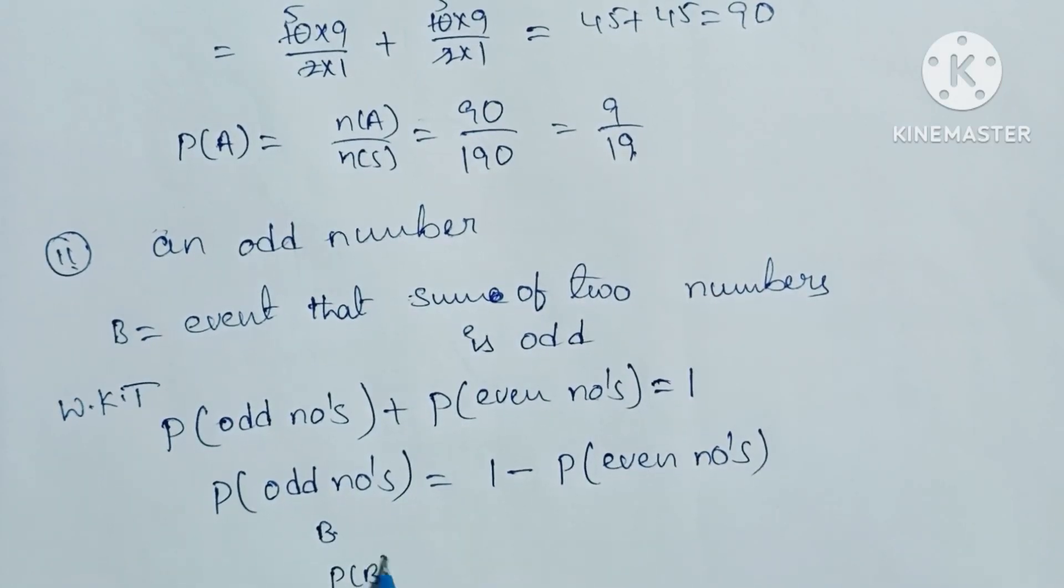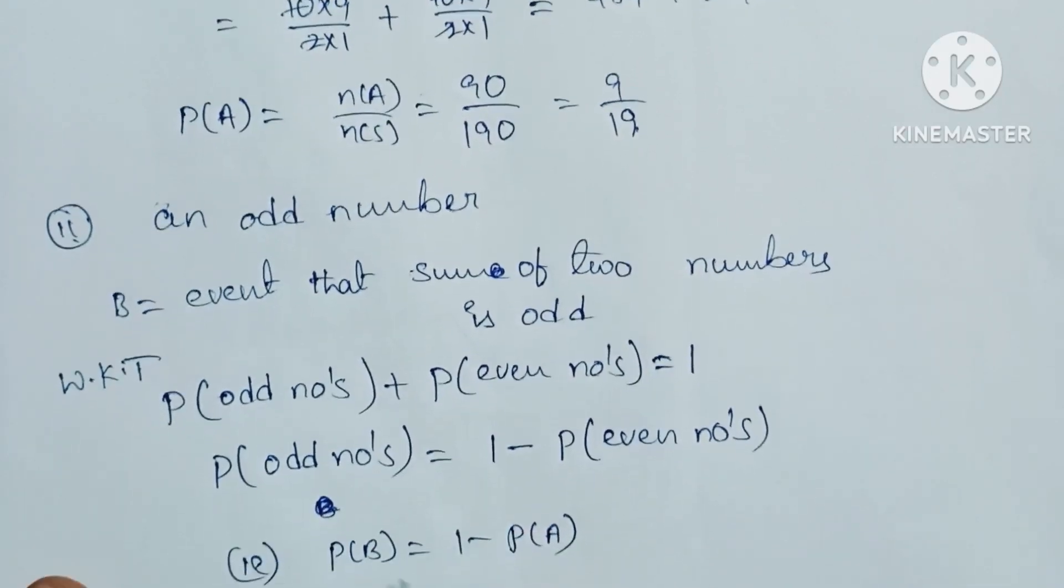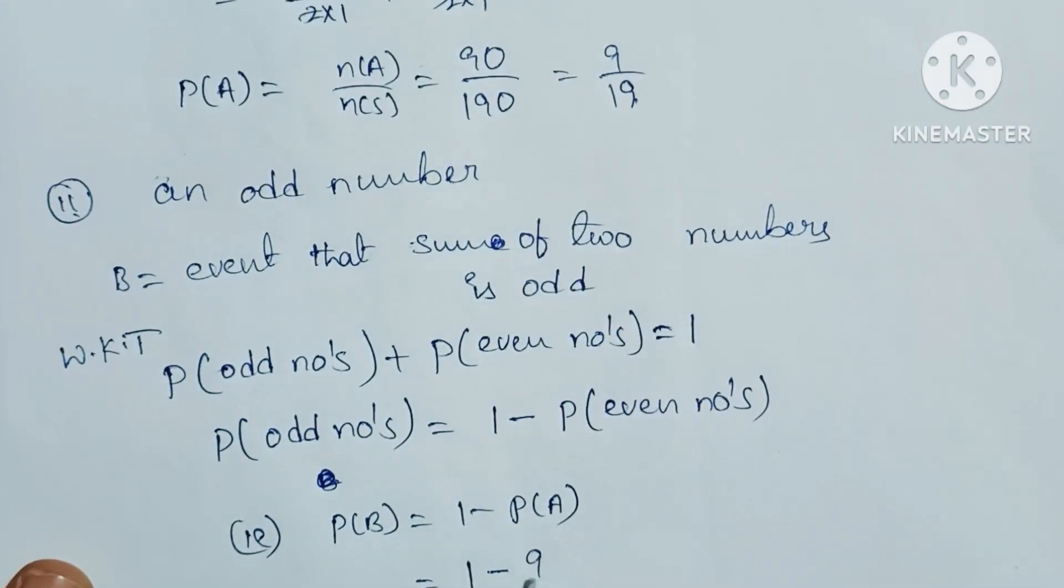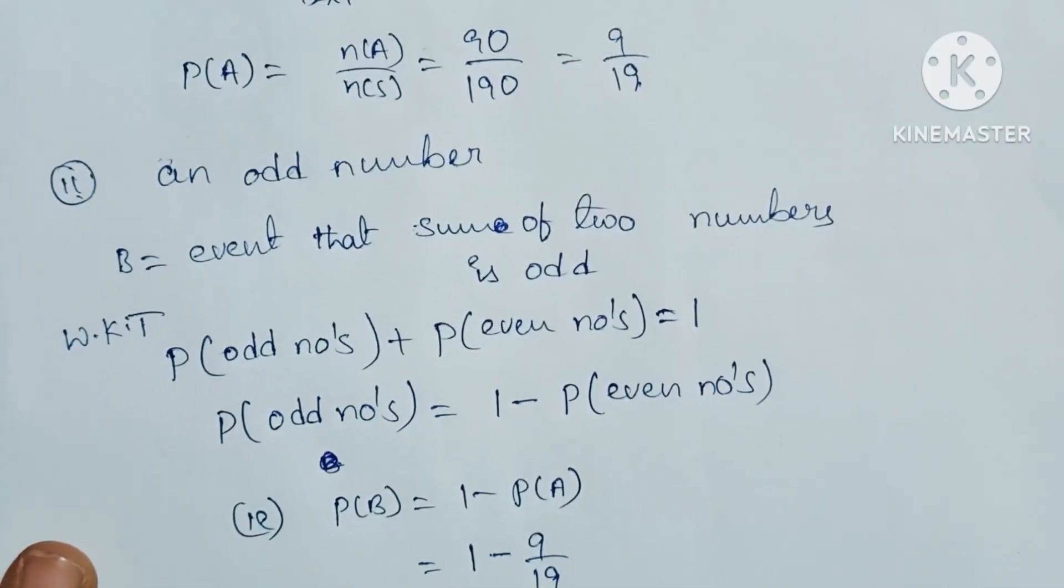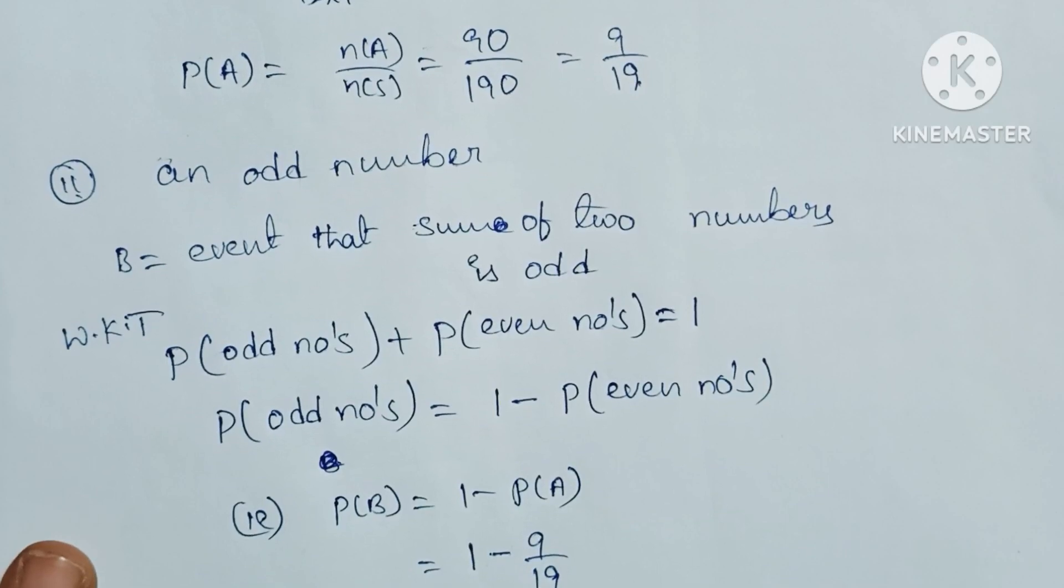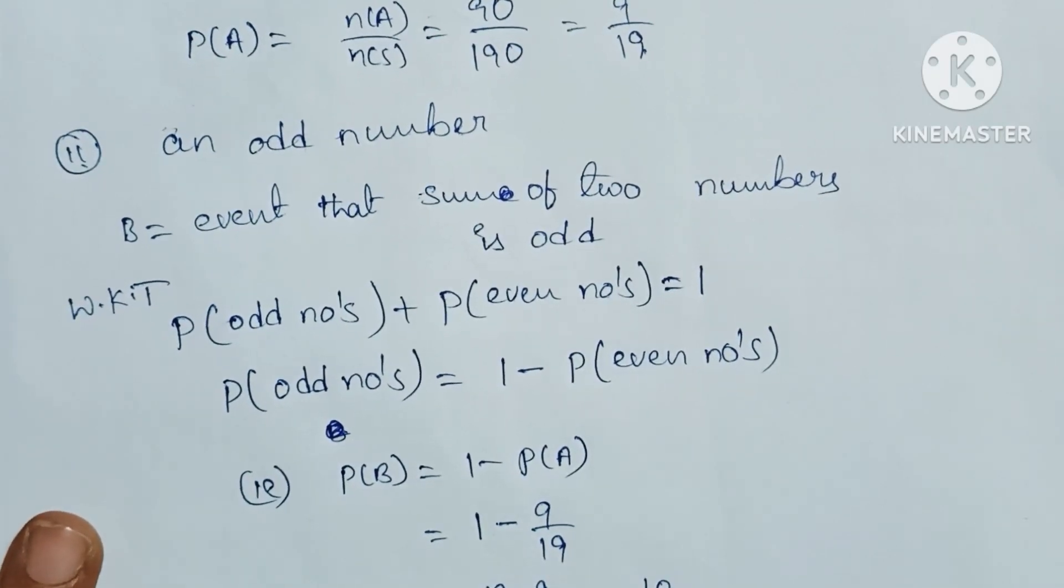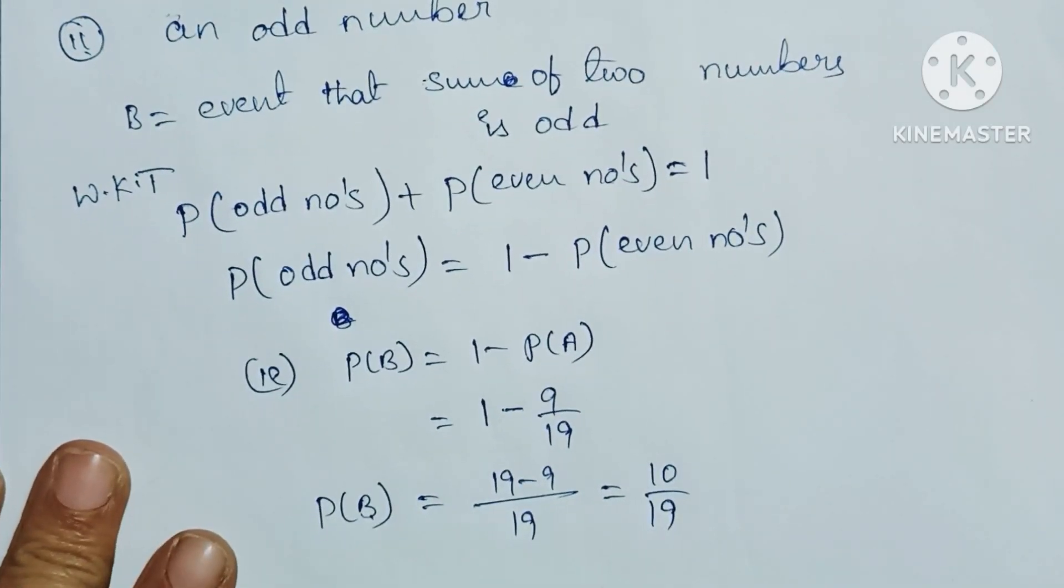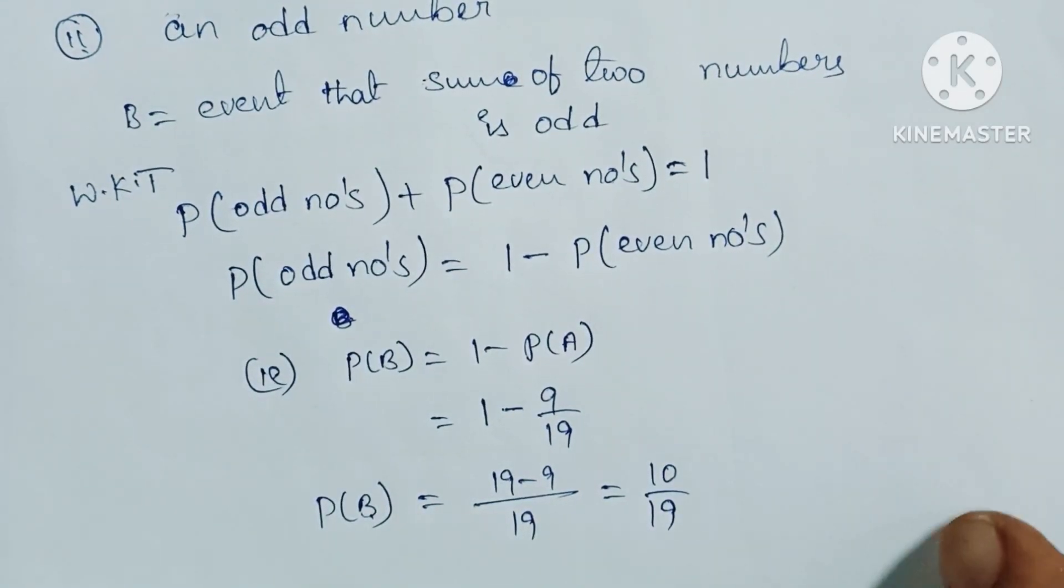Probability of B equals 1 minus probability of E. P(B) equals 1 minus P(E), which equals 1 minus 9 by 19. Taking LCM 19, this equals 19 minus 9, which equals 10 by 19. Probability of odd numbers equals 10 by 19.